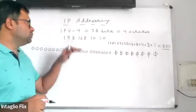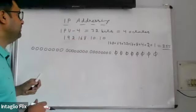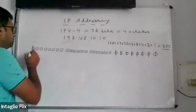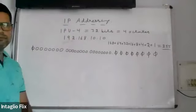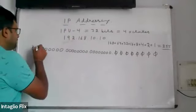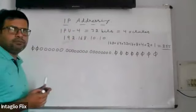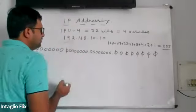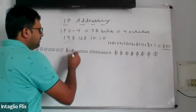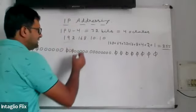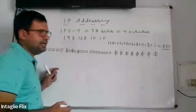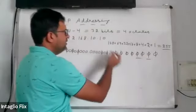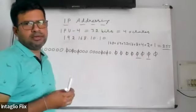Now let's look at the binary representation of 192.168.10.10. For 192: the first bit on gives 128, the second bit on gives 64, and 128+64=192. In the second octet for 168: first bit on gives 128, third bit on gives 32, so 128+32=160, plus 8 equals 168. Then 8+2=10 for the third and fourth octets. So this is the binary representation of this particular IP address.